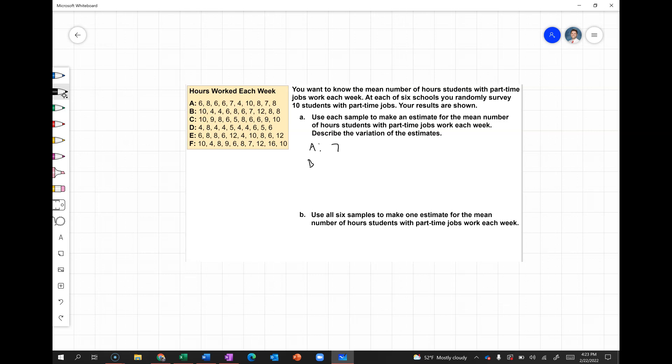School B, we're going to have 10 + 4 + 4 + 4 + 6 + 8 + 6 + 7 + 12 + 8 + 8. So 14, 18, 24, 32, 38, 45, 57, 65, 73, and 73 divided by 10 would be 7.3.